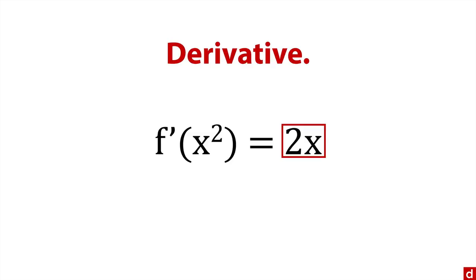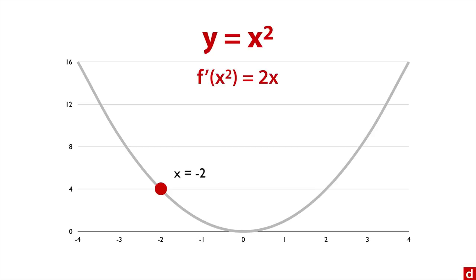That means the slope at any given point of the curve is 2x. So let's go back to what we had a moment ago. Here's our curve. Here's our point at x minus two. And so the slope is equal to 2x. We put in the minus two and we multiply it and we get minus four. So that is the slope at this exact point on the curve.